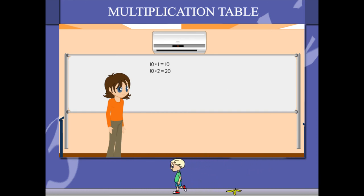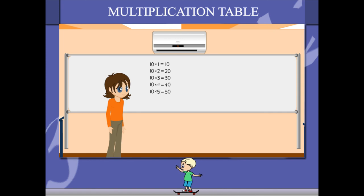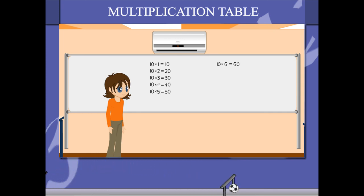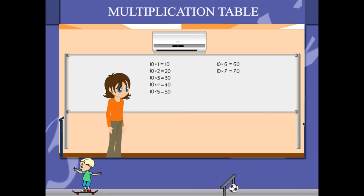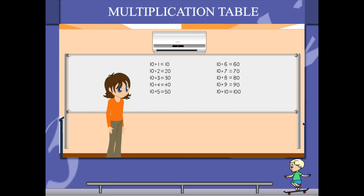10 1s are 10, 10 2s are 20, 10 3s are 30, 10 4s are 40, 10 5s are 50, 10 6s are 60, 10 7s are 70, 10 8s are 80, 10 9s are 90, 10 10s are 100.